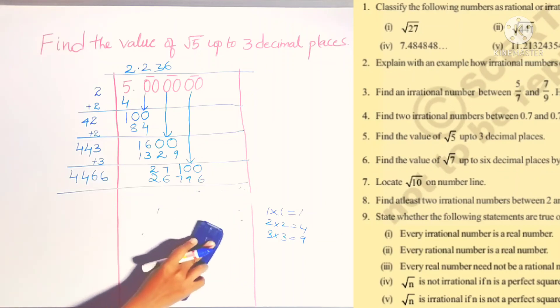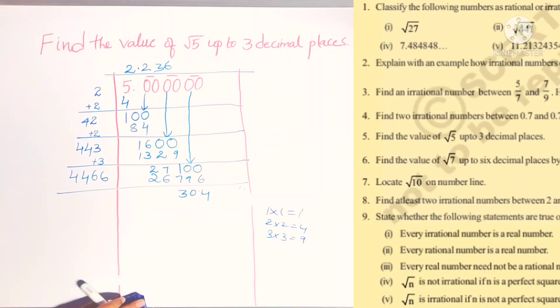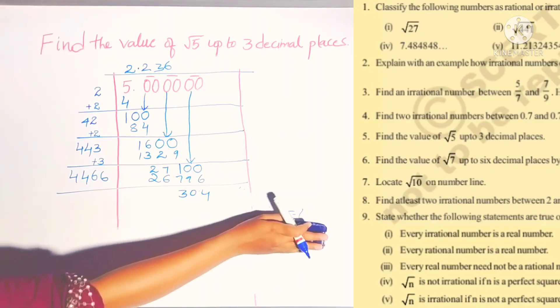10 minus 6 is 4, giving us 304. They asked up to 3 decimals, so that's enough. Now we can write the answer.